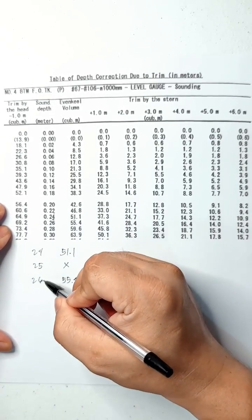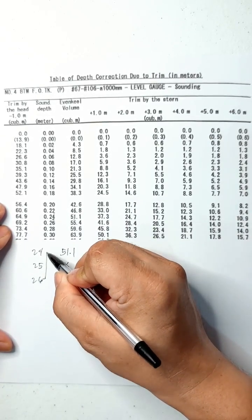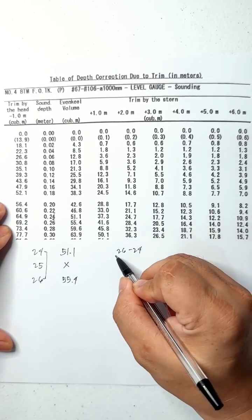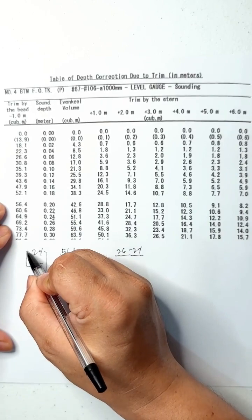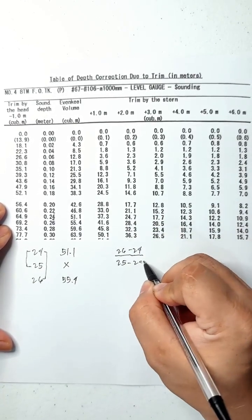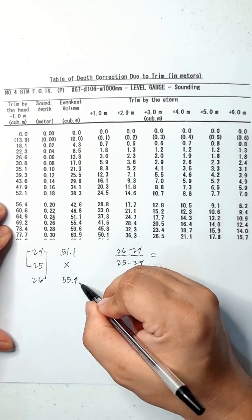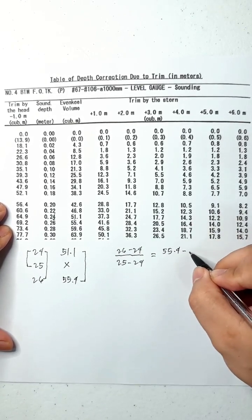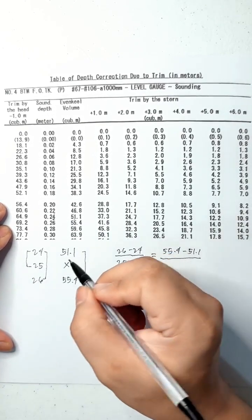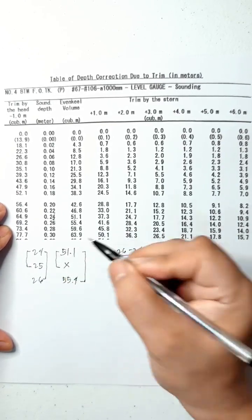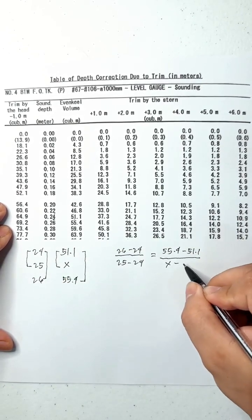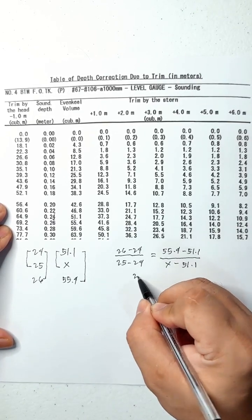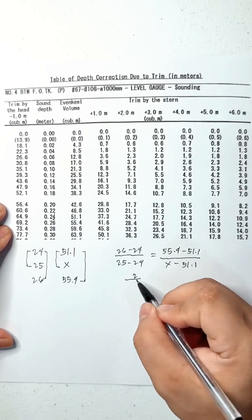We will set up the interpolation formula: (26 minus 24) divided by (25 minus 24) is equal to (55.4 minus 51.1) over (X minus 51.1). So 26 minus 24 equals 2, and 25 minus 24 equals 1.